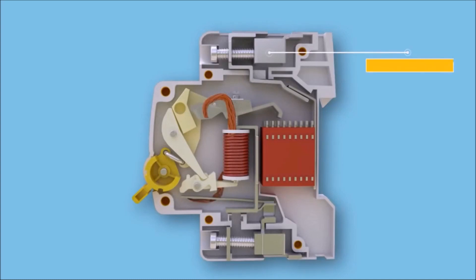The remaining parts of an MCB include the incoming terminal, which is made up of electrolytic copper or silver alloy, and this is where the incoming phase is fixed.